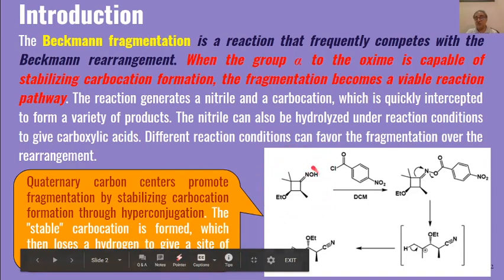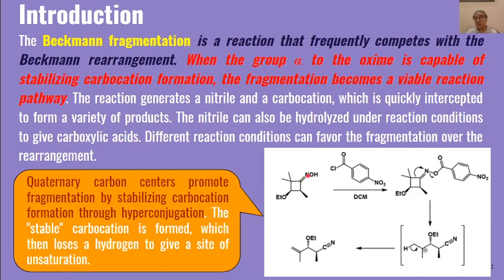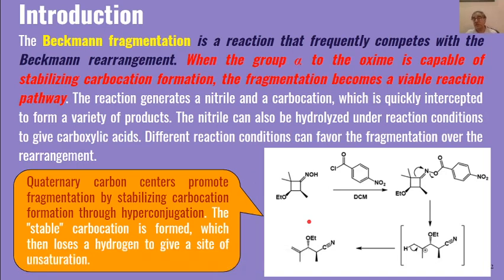For example, with this type of cyclobutane oxime, the oxime part is here, this carbon is an alpha carbon, and this carbon is also an alpha carbon. One alpha carbon has two methyl groups and the other has one methyl group. When the bond breaks to form a stable nitrile, a carbocation can be generated at either position — breaking one bond gives a secondary carbocation, while breaking the other gives a tertiary carbocation. Since tertiary carbocations are very stable, this substrate undergoes fragmentation rather than Beckmann rearrangement.